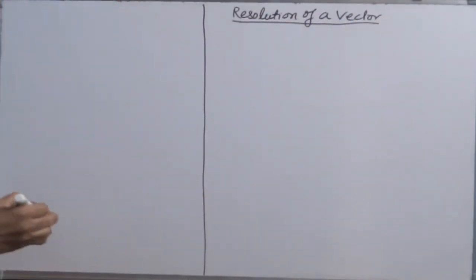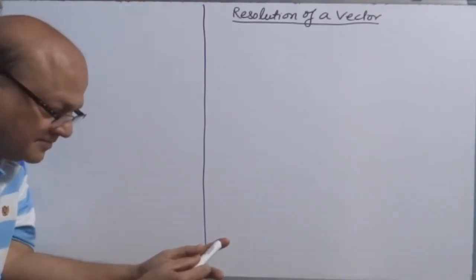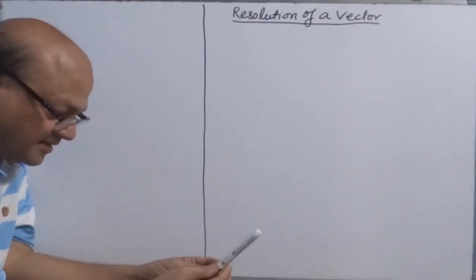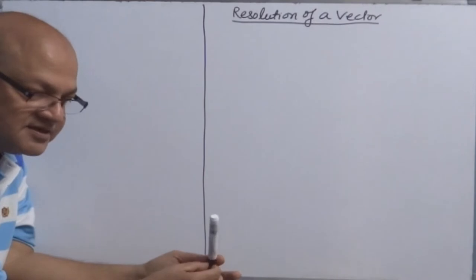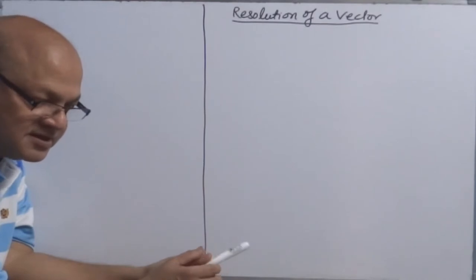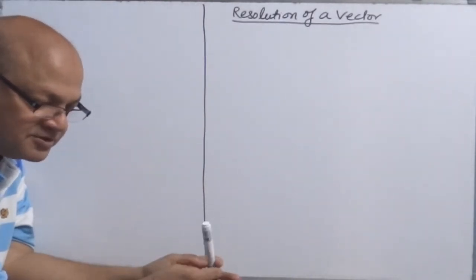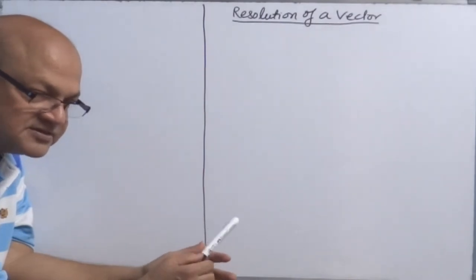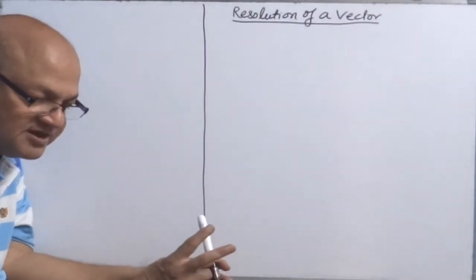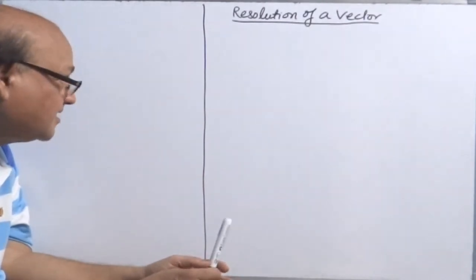Till now, what we have learnt so far? We have learnt if vector quantities are given then how to add two vectors, how to subtract two vectors, how to multiply two vectors, and in product or multiplication of vectors we have seen two types of products: scalar product and vector product.